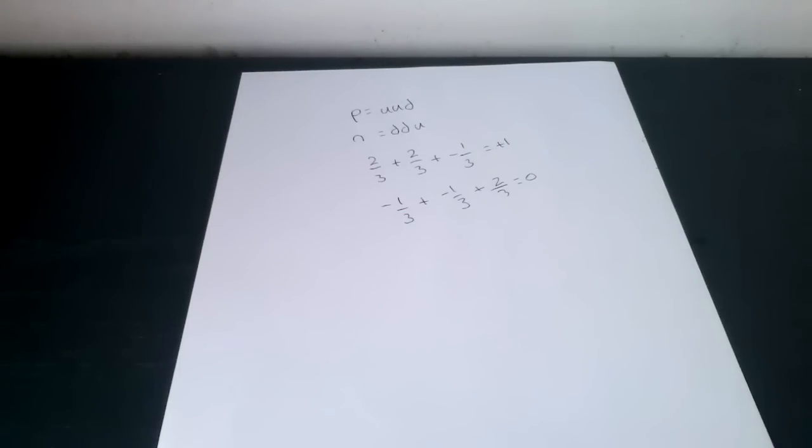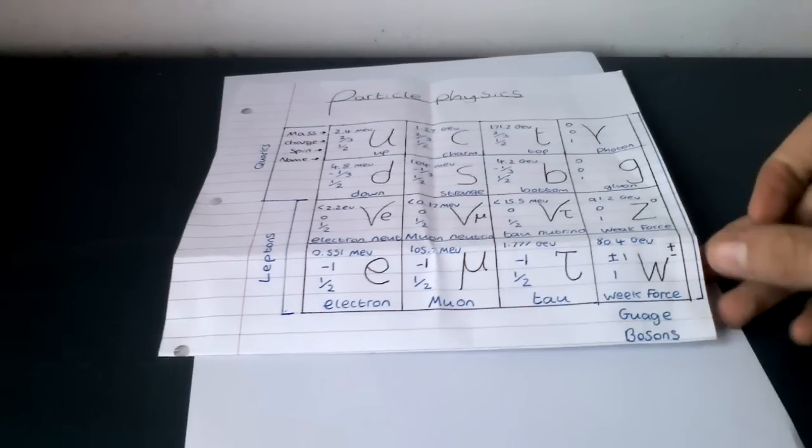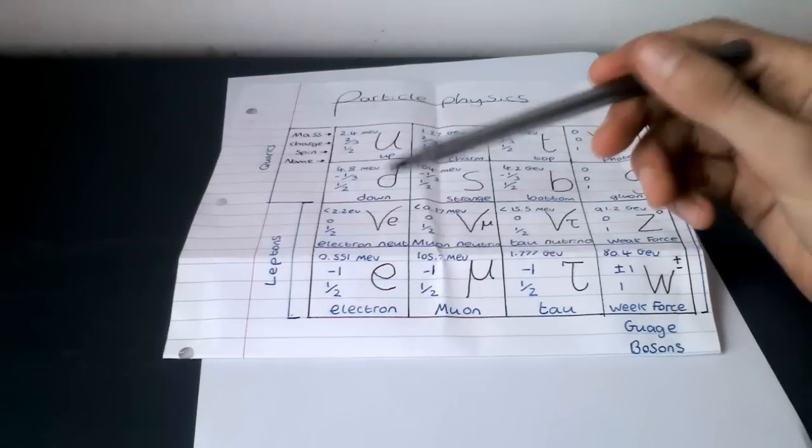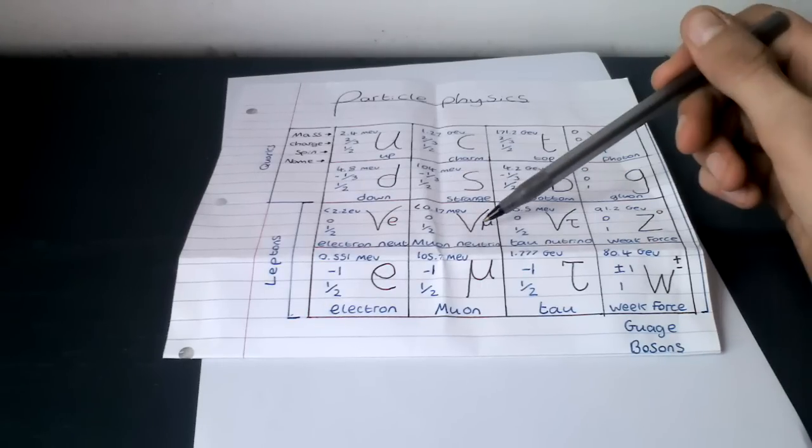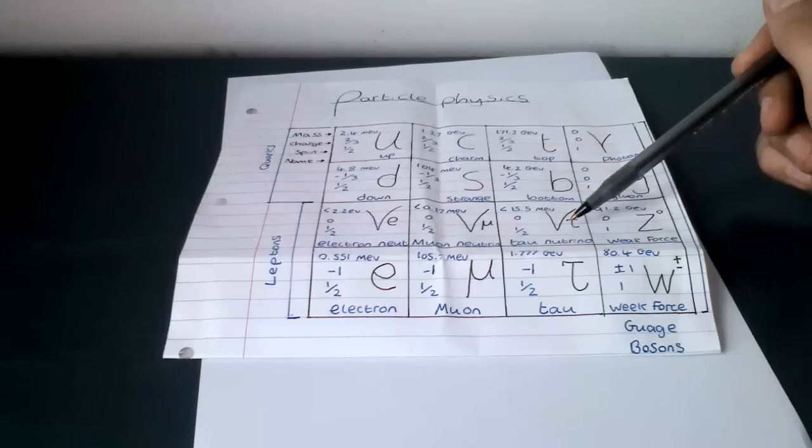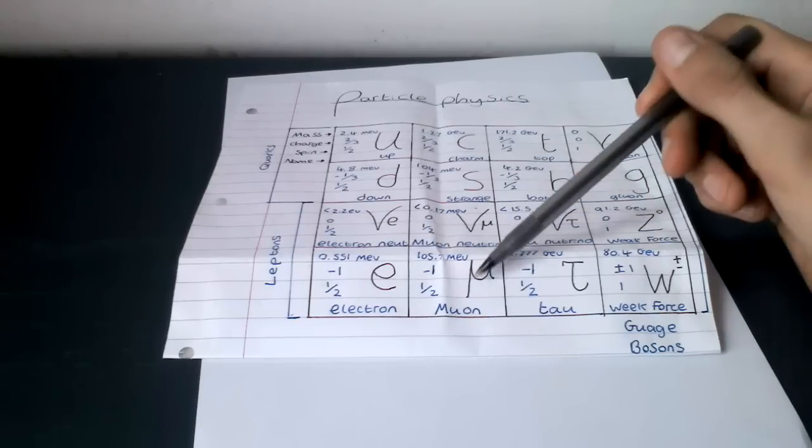Now we're going to move on to leptons. Leptons are the lightest particles. The name is derived from Greek, lepton meaning small. The forces they experience are the gravitational, electromagnetic, and weak nuclear forces, but not the strong nuclear force. Here are the leptons: we've got the electron neutrino, muon neutrino, tau neutrino, electron, muon, and tau.